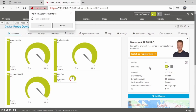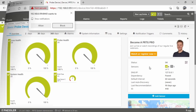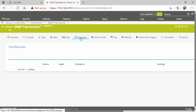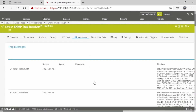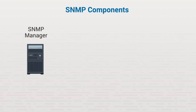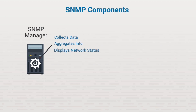SNMP provides you with a powerful overview of the health of the devices on the network. The information it provides gives you the ability to spot a potential problem and rectify it before it becomes a serious issue. SNMP relies upon several key components to perform its function. First is the SNMP manager, which is responsible for collecting data from network hosts being monitored using SNMP, and it aggregates that information to display an overview of the current network status.